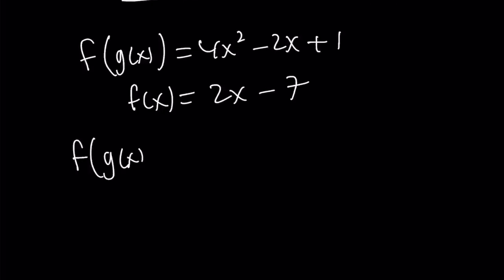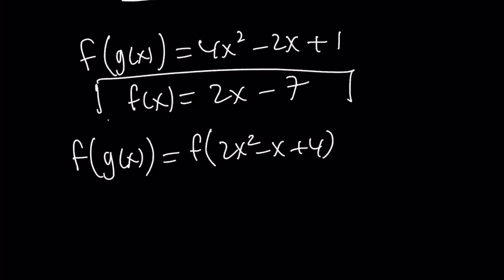So let's go ahead and evaluate f(g(x)). What does f(g(x)) mean? It means that you're going to replace g(x) with what it is. G(x) is 2x squared minus x plus 4. Now what is f(2x squared minus x plus 4)? Well, by definition, f will take the x and multiply by 2.